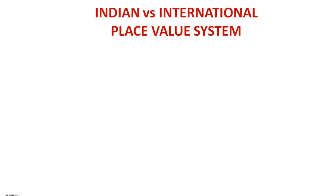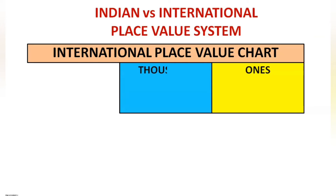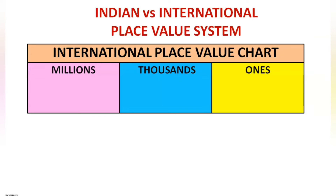Now let us see the same number in the international system. First, let us see what are the periods and places in this system. The international place value chart consists of the periods: ones, thousands, and millions — and actually billions and trillions also, but let us see up to millions only for now.